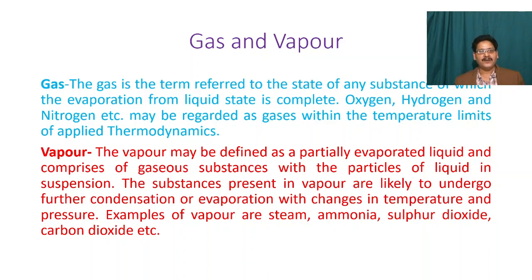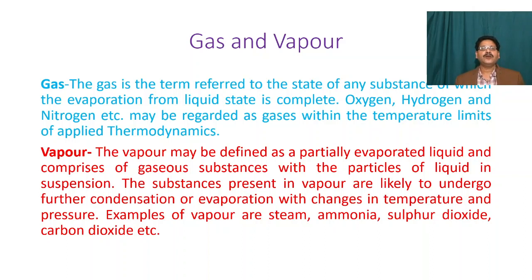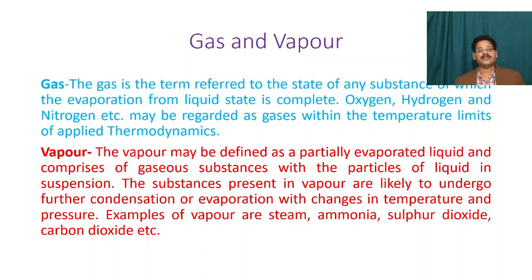People often get confused between gases and vapors. The vapor may be defined as a partially evaporated liquid and comprises gaseous substances with particles of liquid in suspension. The substances present in vapor are likely to undergo further condensation or evaporation with changes in temperature and pressure. The fundamental difference is that for a gas, evaporation from the liquid state is complete — there is little scope for condensation. But for vapor, variation in temperature and pressure may cause the gaseous substances to liquefy, or liquid substances to vaporize.